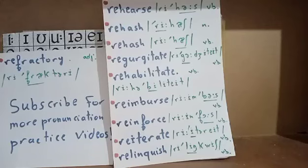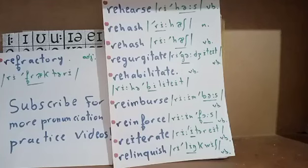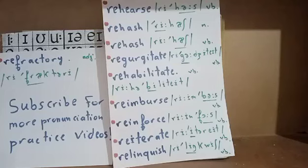Now move on to rehabilitate — five syllables, with stress especially on the third syllable 'bi'. Say: rehabilitate. It means to train an ex-prisoner again, or to lead him or her back to normal life. That's rehabilitate — to train an ex-prisoner back into society.